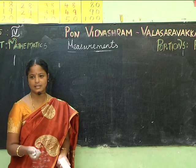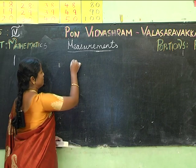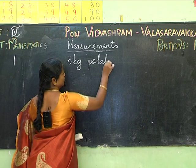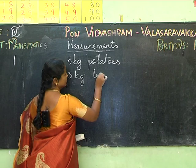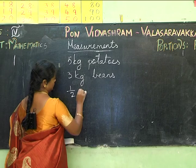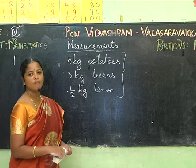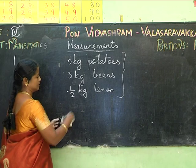Here is one real-life example: if I am going to a shop to buy vegetables — 5 kg of potatoes, 3 kg of beans, and half a kg of lemons — what is the total weight of my purchase? The total is 5 + 3 + ½ = 8½ kg.